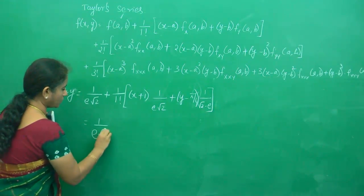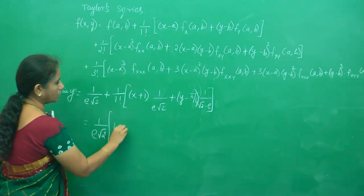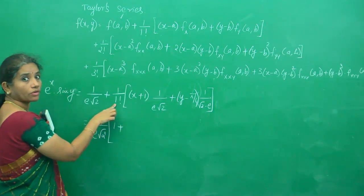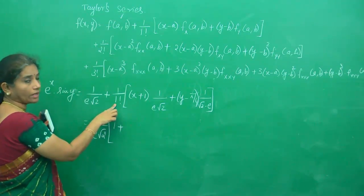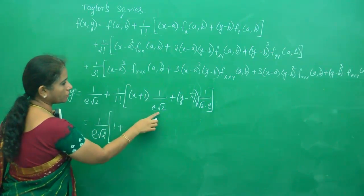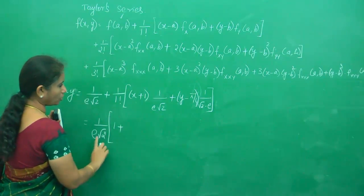Not very much. You can take out 1/(√2 · e) as a common factor. 1/1! is just 1, so you can ignore the factorial.